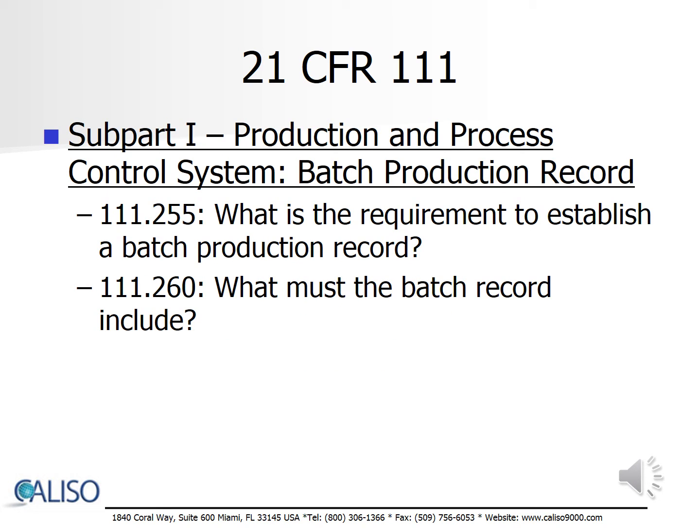Subpart I, Batch Production Record, lists the details for the information to be included in each batch production record, such as the batch or lot number, the identity of the equipment used, dates and times of maintenance and cleaning activities, unique identifiers assigned to each component, weight of each component, yield, monitoring results, test results, and documentation required.